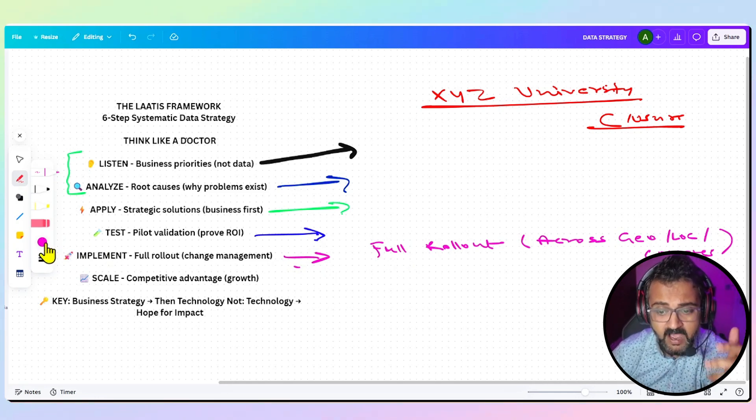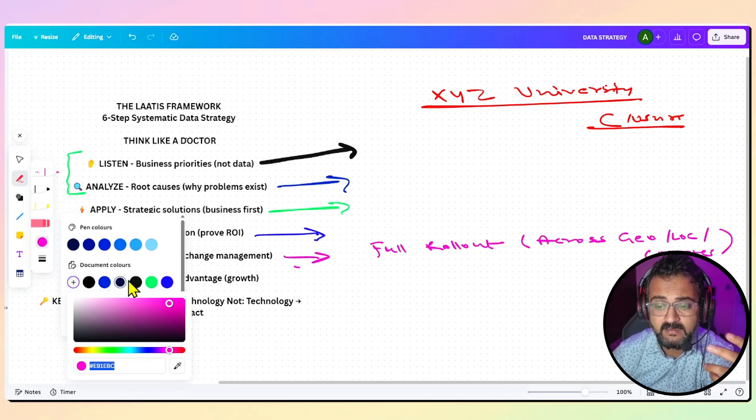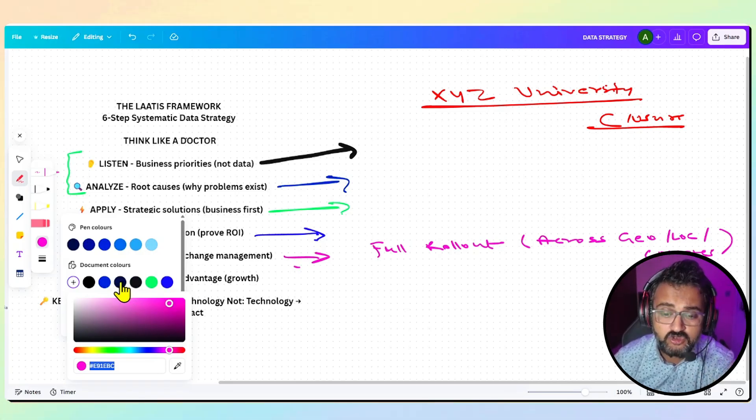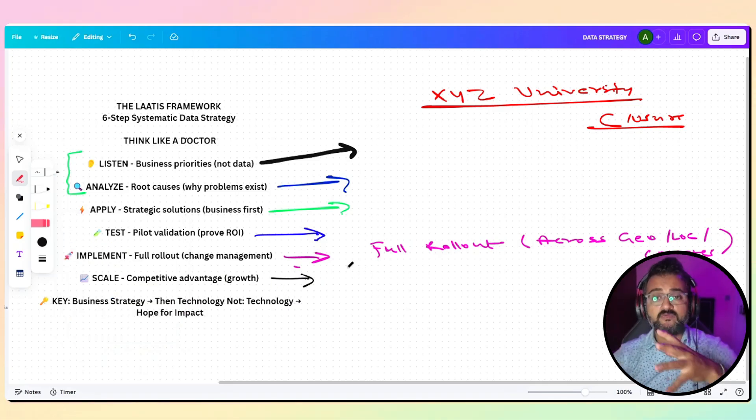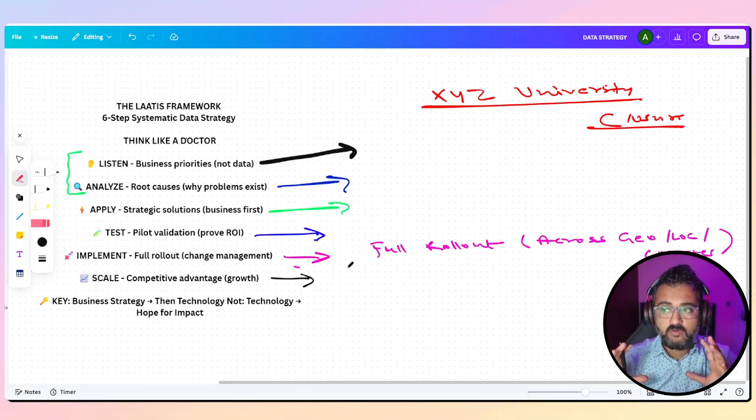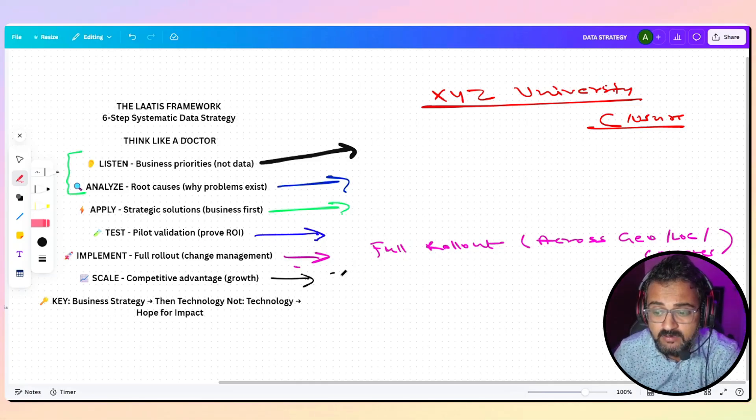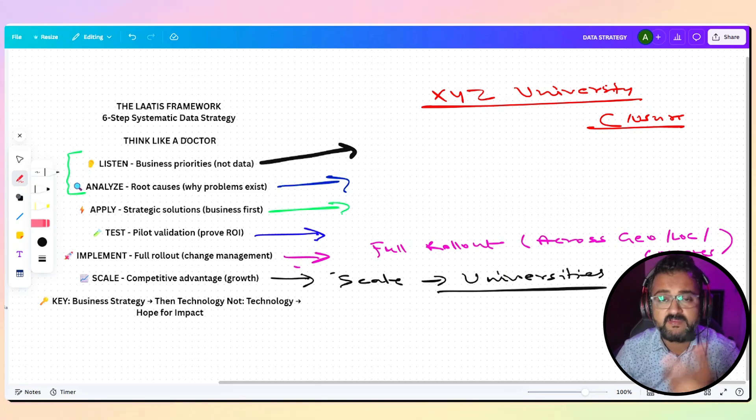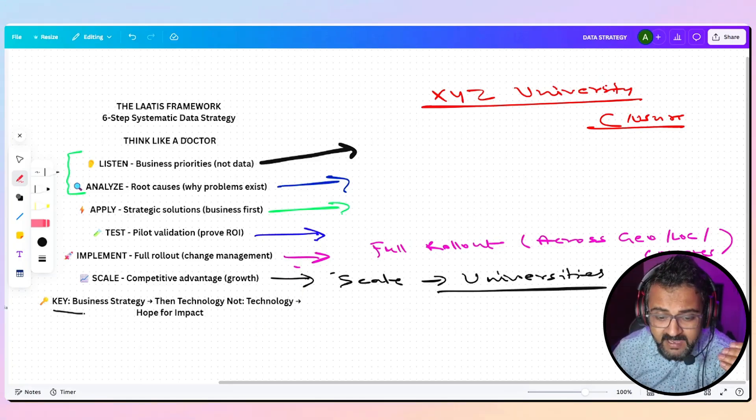Once we have validated that this does work, scaling means that now you will be broadening your area, your circumference of this strategy. So maybe you went to one university and you applied it, but now because it works, you can basically create this strategy and scale it to different universities across countries, because you have now tested it, implemented it, and it is giving you results.